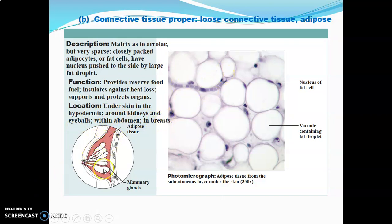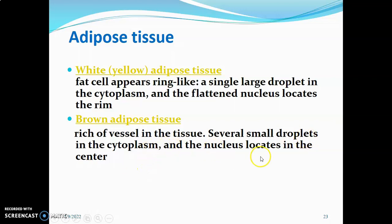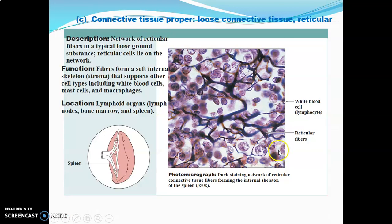Adipose tissue is found in the hypodermis of the skin, around the kidneys, within the eyeball, surrounding abdominal organs, and in the breast. There are two types: white or yellow adipose, which has a single large fat droplet pushing and flattening the nucleus to the side with a thin cytoplasm rim; and brown adipose tissue, which is rich in vessels, has several small fat droplets, and a centrally located nucleus.